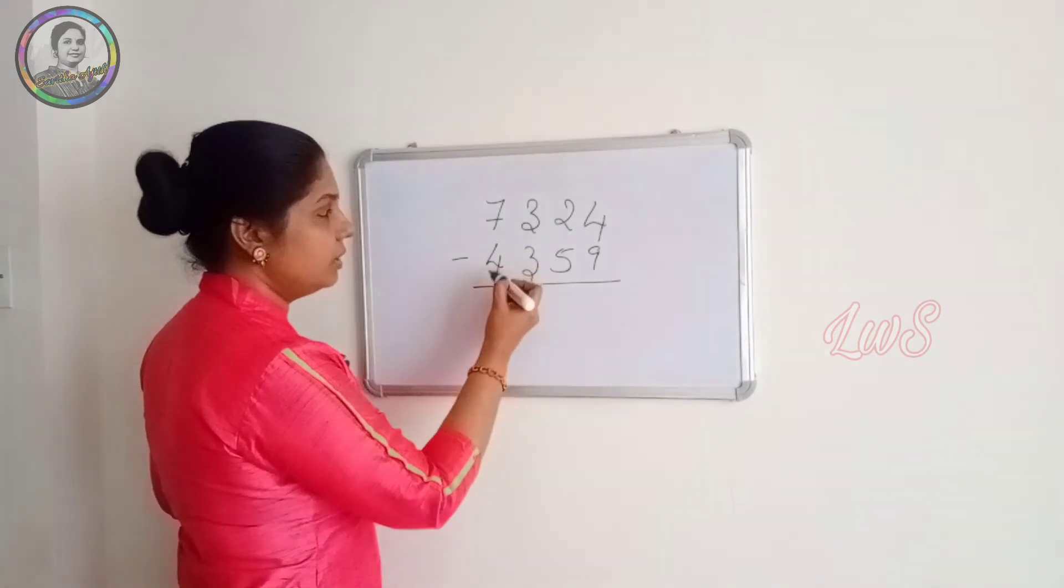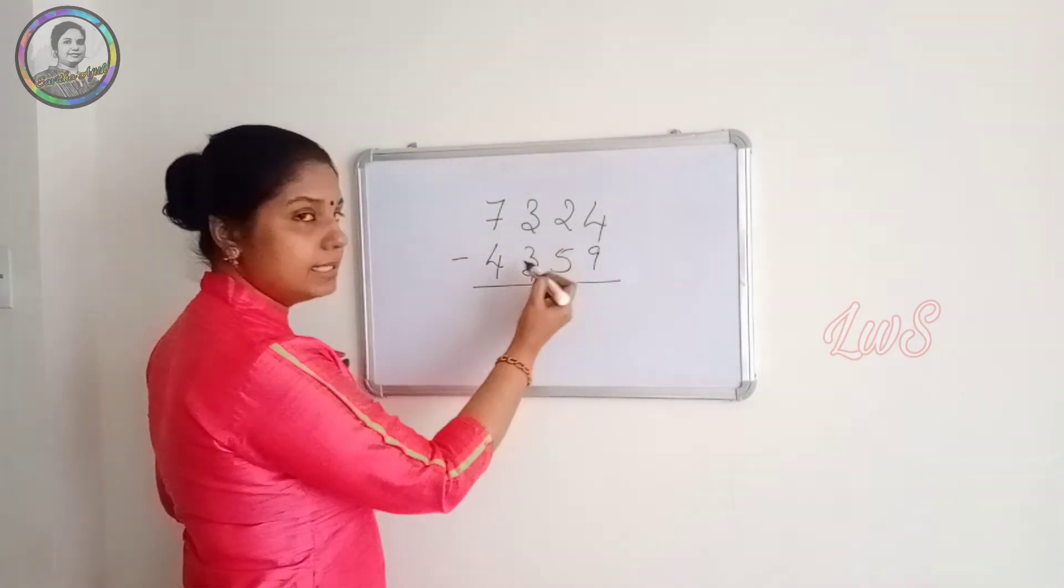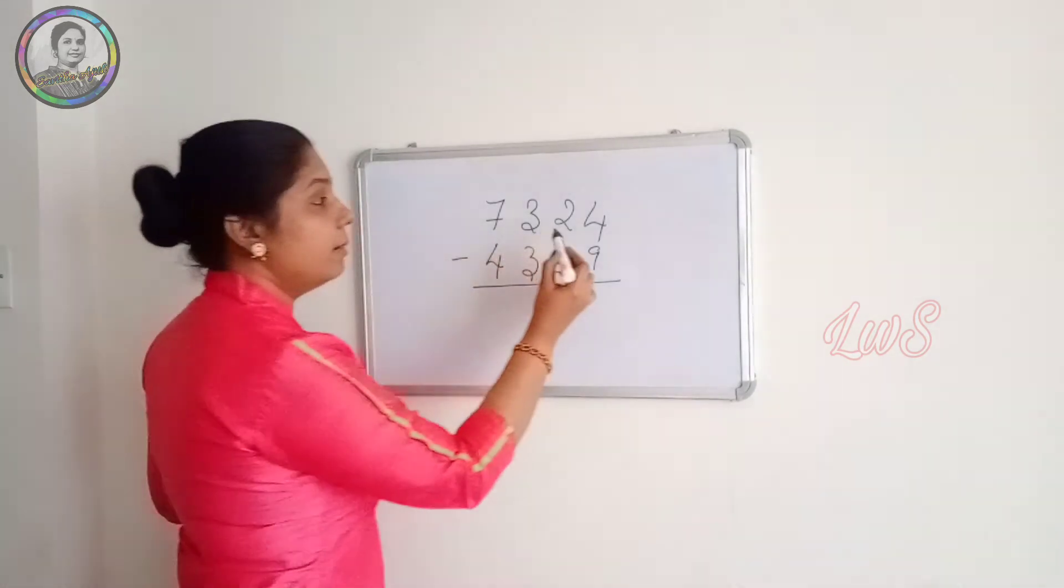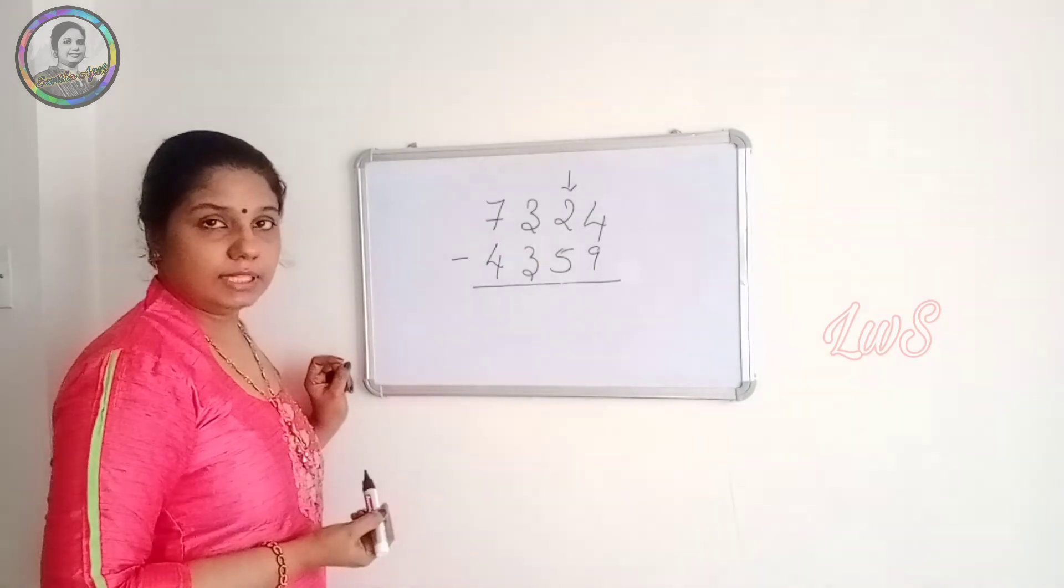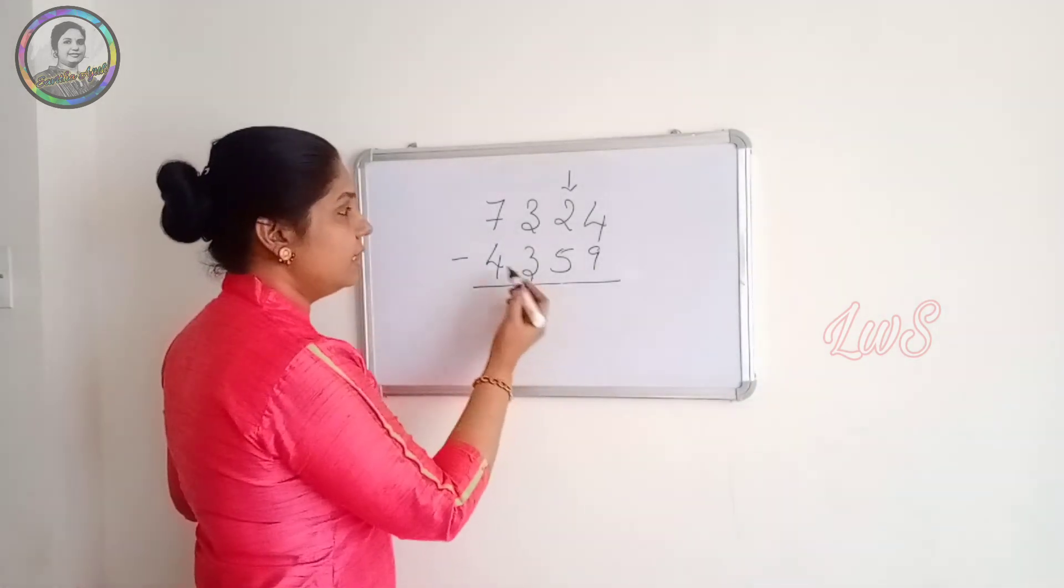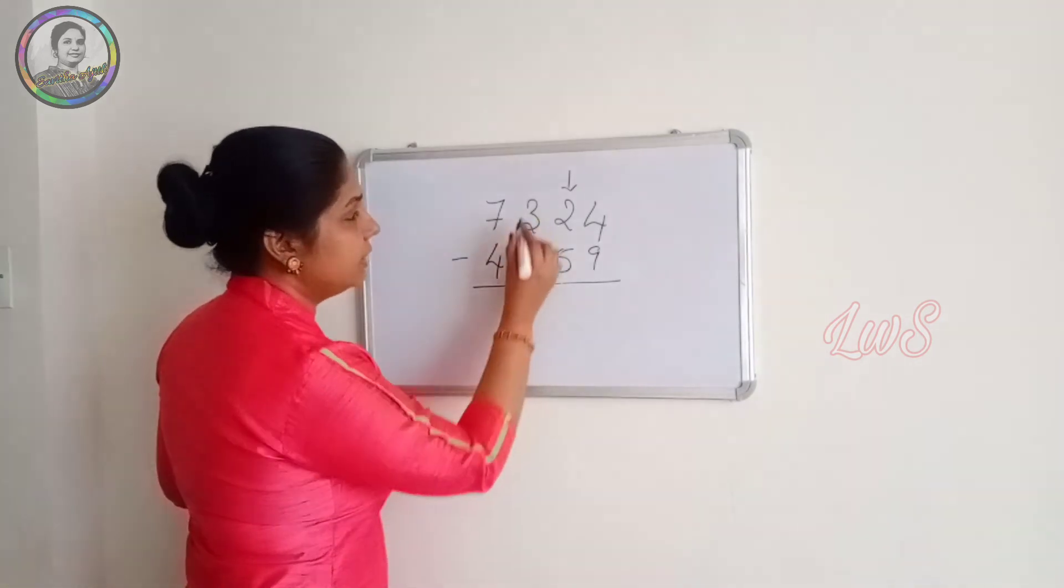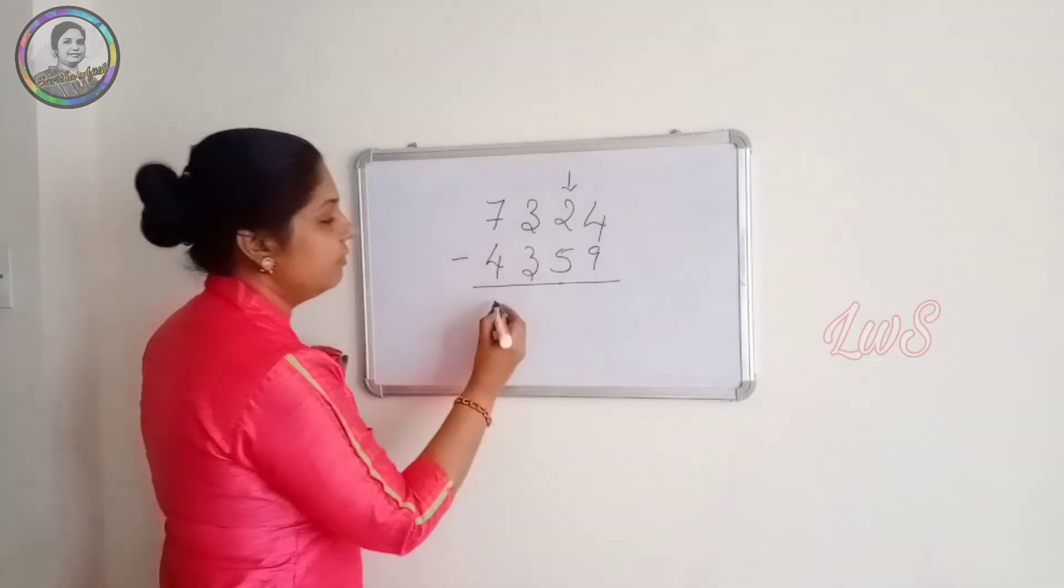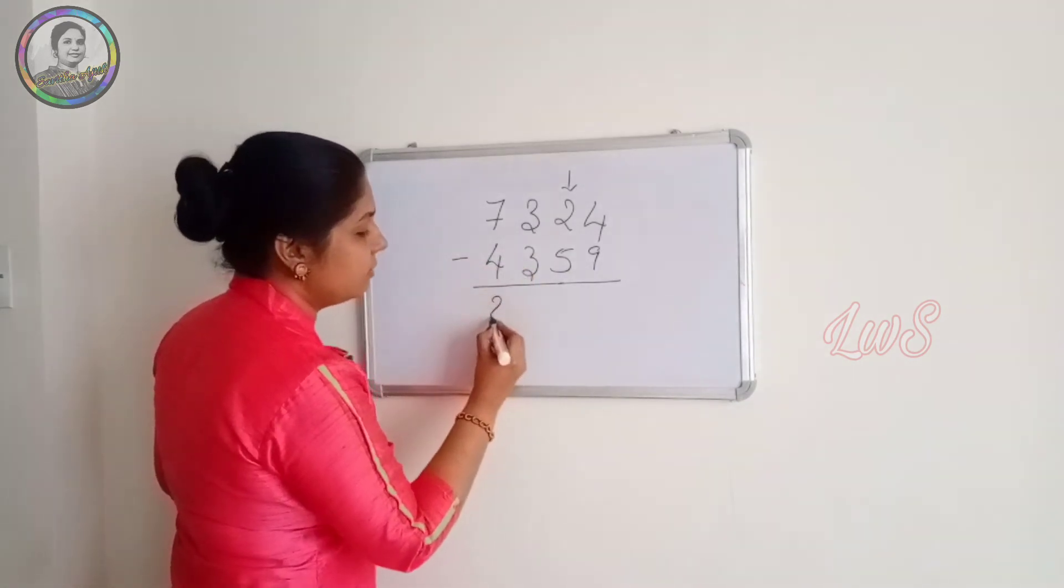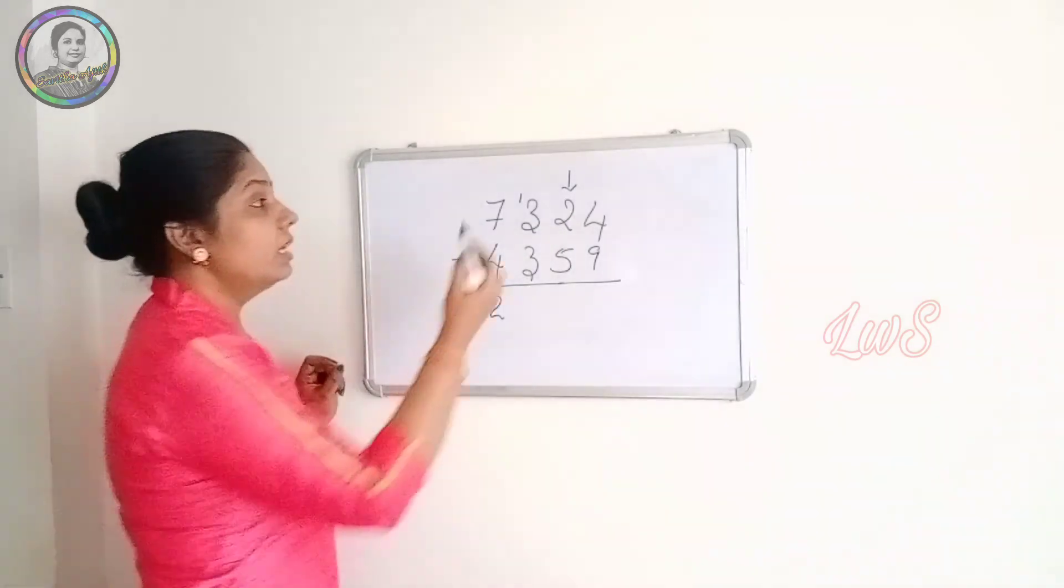7 minus 4, 3. Look for the neighbors. 3 minus 3, sufficient. But again, for the next neighbor, they are not having enough. So what we do is we just write 7 minus 4, 3. But we give, since the neighbor is insufficient, we just write 3 minus 1, 2. And put that 1 here. Now 13 minus 3 is 10.